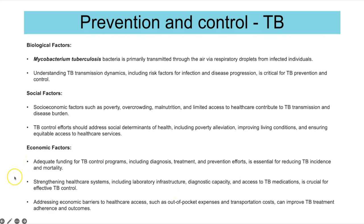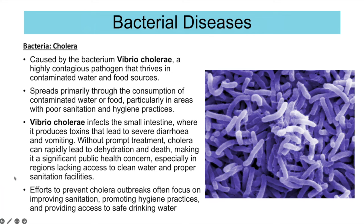The next bacterial disease is cholera, caused by Vibrio cholerae. It is a highly contagious pathogen that thrives in contaminated water and food sources, spreading primarily through consumption of contaminated water or food, particularly in areas with poor sanitation and hygiene. It infects the small intestines, where it produces toxins that lead to severe diarrhea and vomiting. Without treatment, cholera can rapidly lead to dehydration and even death.